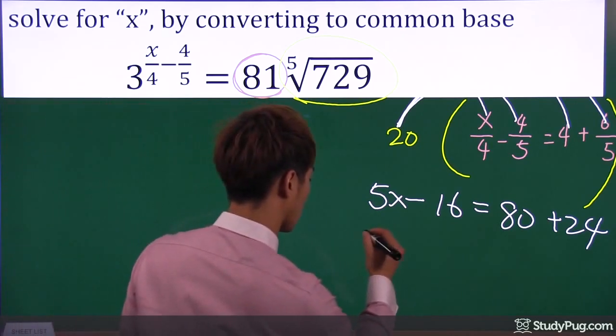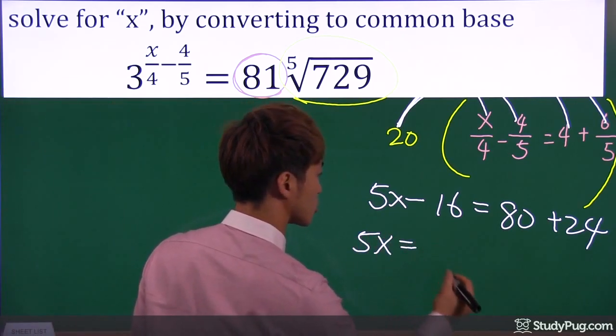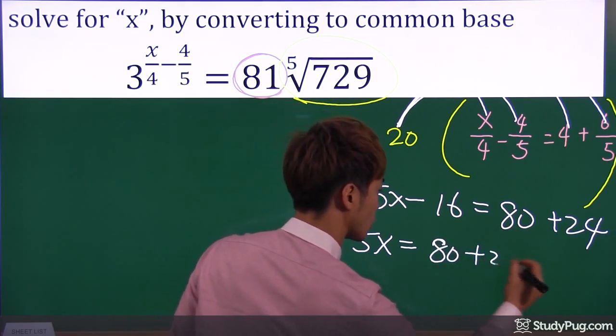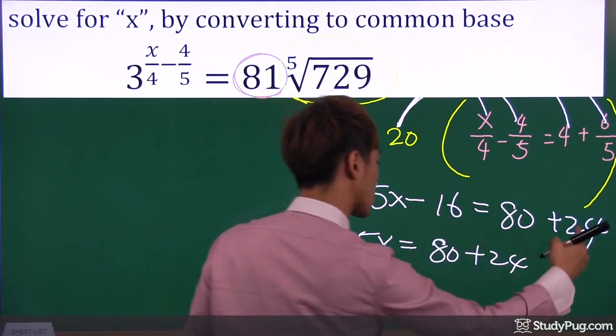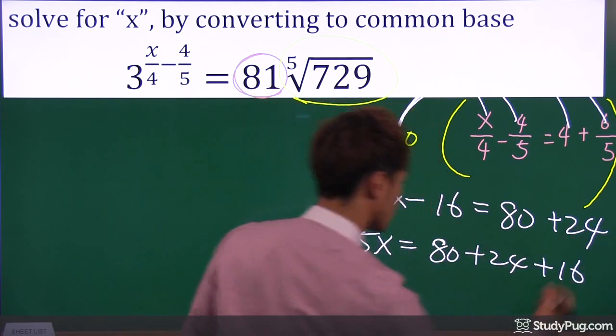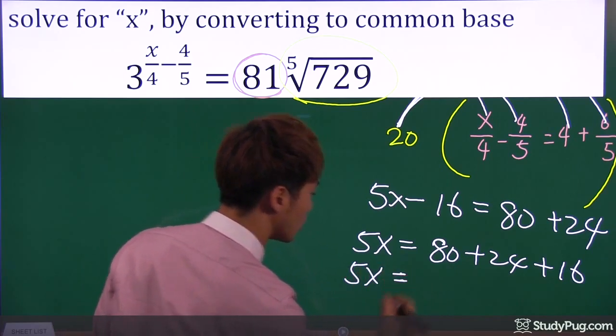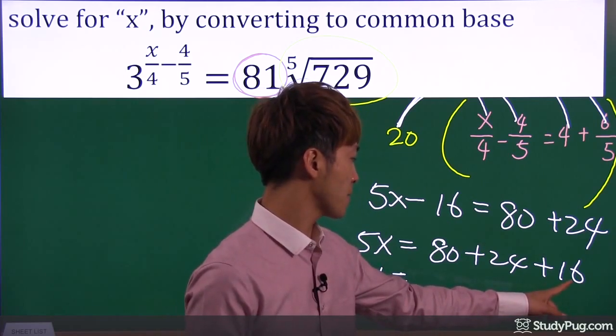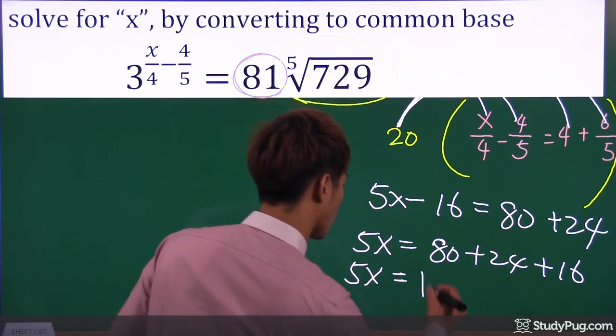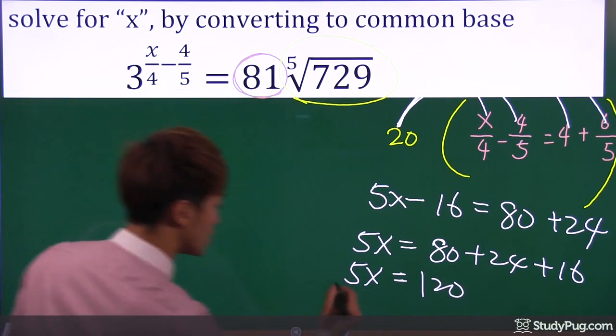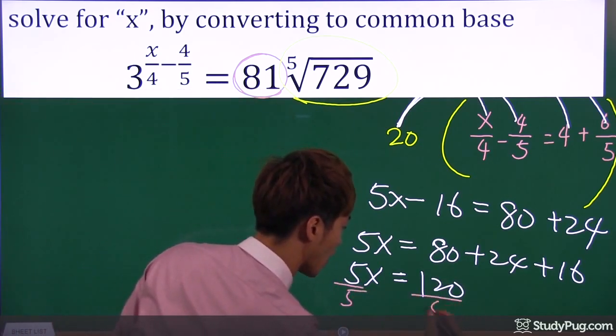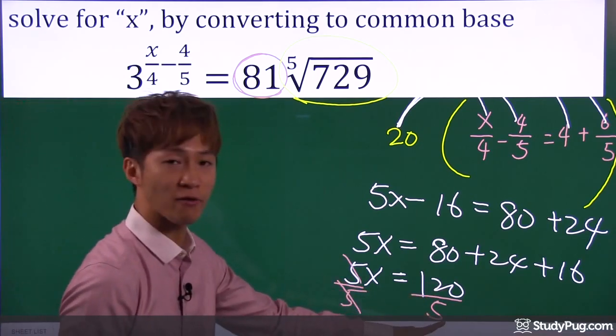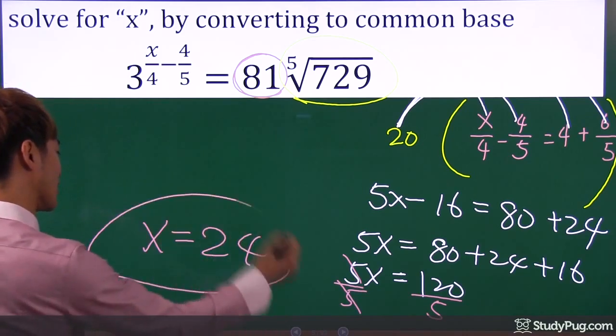So now we can solve this. Five x equals eighty plus twenty-four. Let's move the negative sixteen to the other side; it becomes positive sixteen. So at the end, five x equals twenty-four plus sixteen, we get forty. Forty plus eighty, we get one twenty. Divided by five, five cancels. X equals one twenty divided by five, we get twenty-four. There we go. That's the answer.